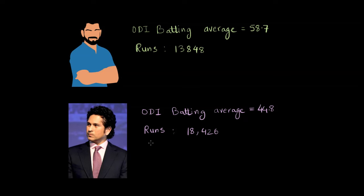Usually people say that Virat has scored 13,848 runs but Sachin has scored 18,426 runs. But then people often argue that the batting average or the mean of all the scores by Virat, which also means that the number of runs he scores per innings, is 58.7 whereas for Sachin it is 44.8.